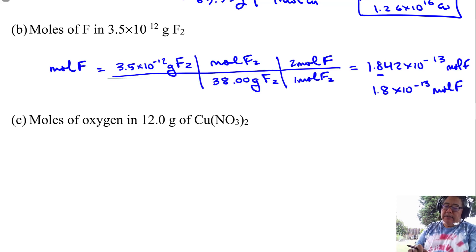So anyways, let's go ahead and do the next one. And we're going to be calculating the moles of fluorine in this many grams of F2. Okay, so here's the next problem. It says, starting with the 3.5 times 10 to the minus 12 grams of fluorine.